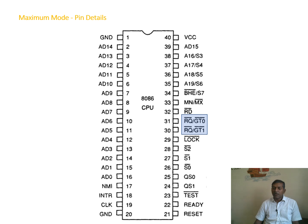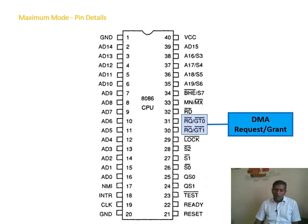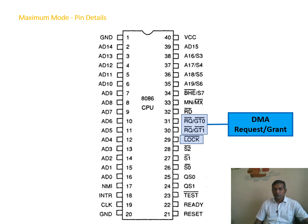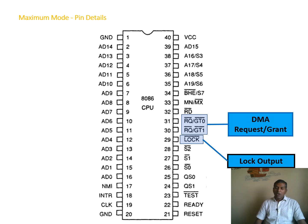Request and grant signals are used for DMA (Direct Memory Access) operations, where memory-to-memory processing is handled through request and grant. The LOCK output is used to lock a process for further use so that communication is not interrupted and is completed as per the request.